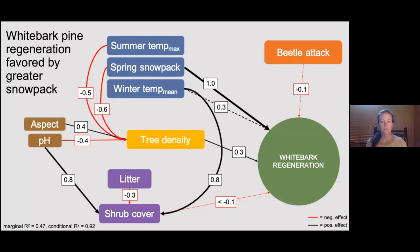For whitebark pine, regeneration was generally highest in denser sites with greater snowpack. Climatic effects were also strongly mediated through mature tree density. These patterns are consistent with the species' preference for cooler, moister conditions compared to our other focal species. Surprisingly, beetle attack did not have much effect on regeneration, which may make sense given the timing of sampling since beetle attack, and the fact that beetles would not directly affect seedlings themselves.